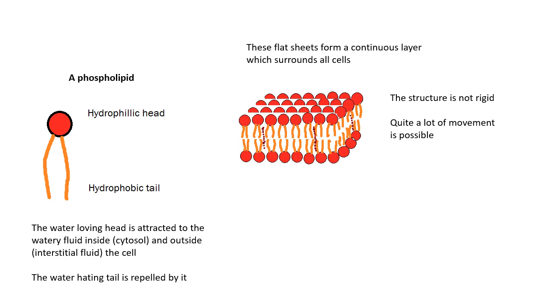Inside the cell, it's cytosol. It's the liquid inside the cell. Outside the cell, in between cells, we call that interstitial fluid. The water-loving head is attracted to that. The tail is repelled by it. We end up with this structure where the water-loving heads are on the outside and the inside of the cell, and then all these tails in the middle.